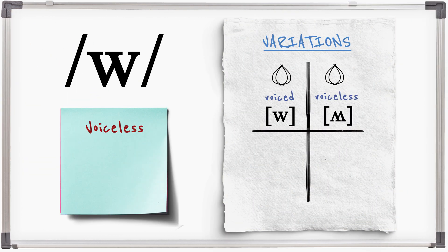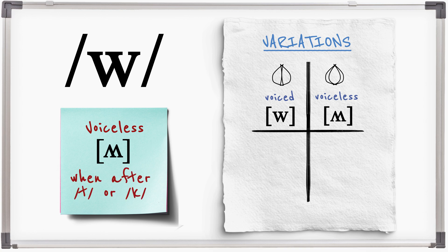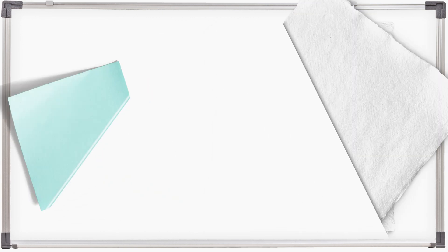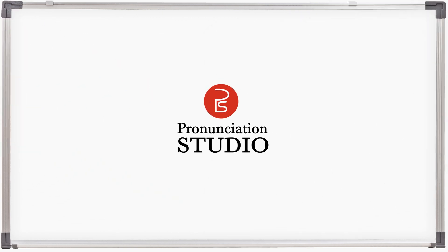Wh- is voiceless when it appears directly after T or C in stressed syllables. Compare: wit/twit, wain/twain, wick/quick. Wire, choir. Pronunciation Studio.